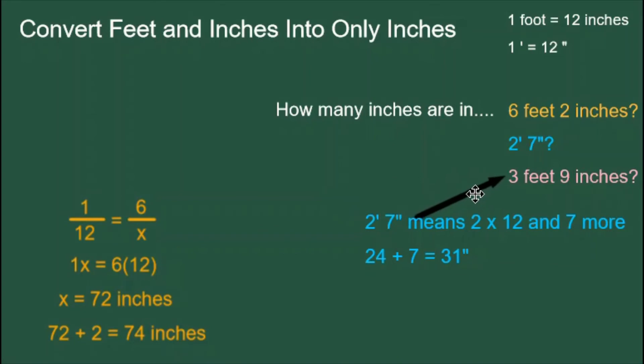We'll do the third question the same way. 3 feet 9 inches. 3 feet 9 inches means 3 times 12 and 9 more. 3 times 12 is 36 and 36 plus 9 is 45. So there are 45 inches in 3 feet 9 inches.